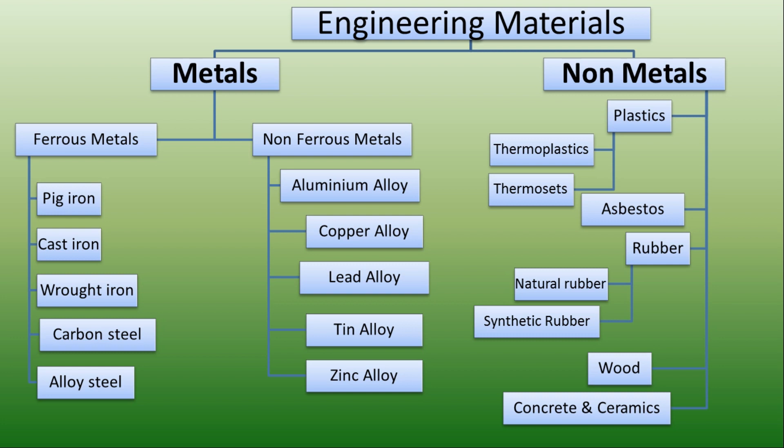Engineering materials are classified as metals and non-metals. Metals are materials which have three valence electrons. They are good conductors of heat and electricity, and more importantly they have good mechanical properties. In metals, they are further classified as ferrous and non-ferrous metals. Ferrous metals means they contain iron — 'ferrum' means iron.